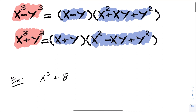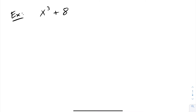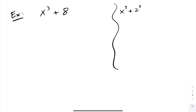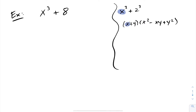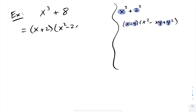Let's look at applying this. For our first question, we have x cubed plus 8. Since there's an addition, we use the sum of cubes formula. We rewrite 8 as 2 cubed. Using the formula x plus y times x squared minus xy plus y squared, x stays as x and y becomes 2. So this becomes x plus 2, times x squared minus 2x plus 2 squared, which factors into x plus 2, times x squared minus 2x plus 4.